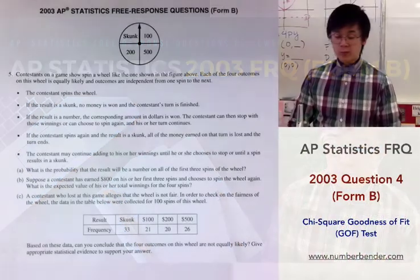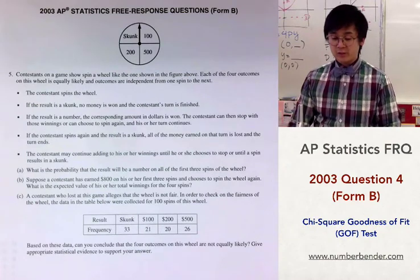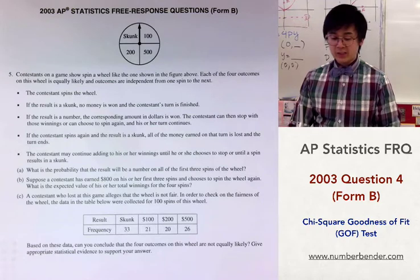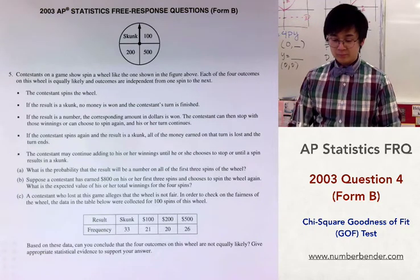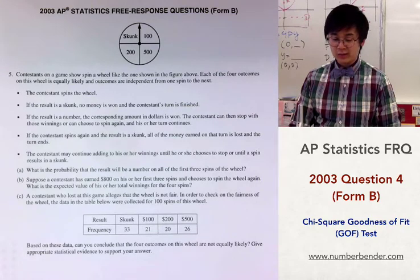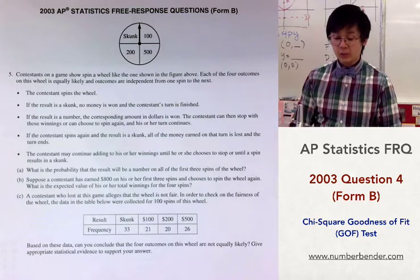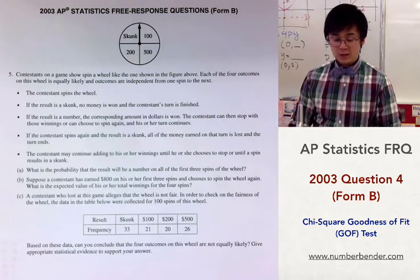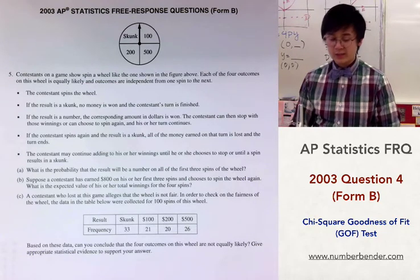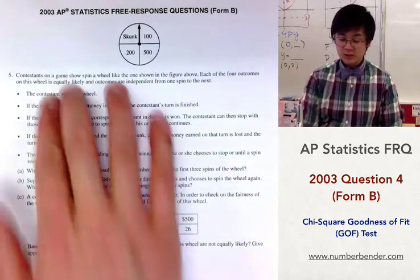We're now on problem number five from the 2003 AP Stats test Form B. In this particular problem we are supposed to answer probability questions related to a game given a wheel which gives a chance of getting $100, $500, $200, or a skunk.